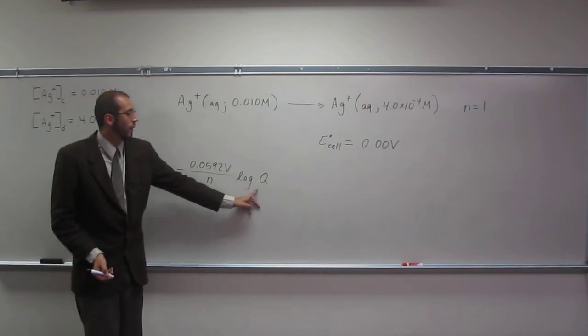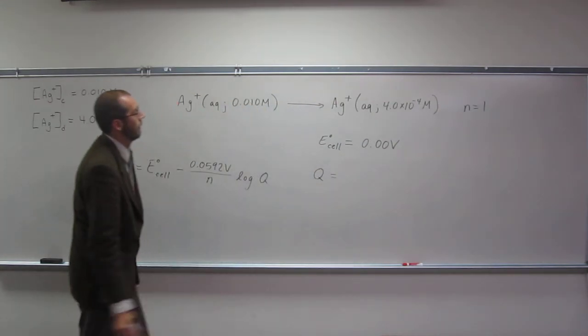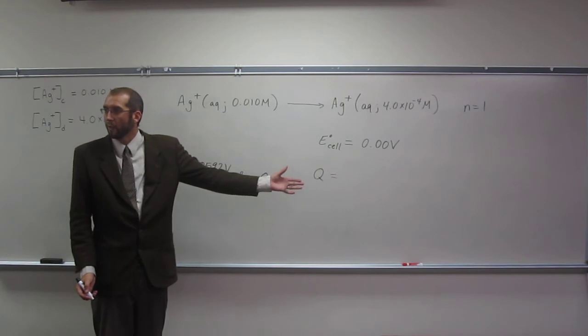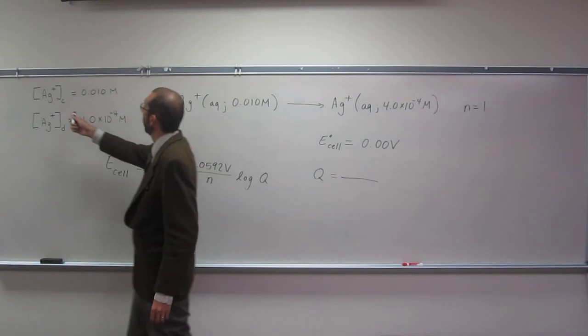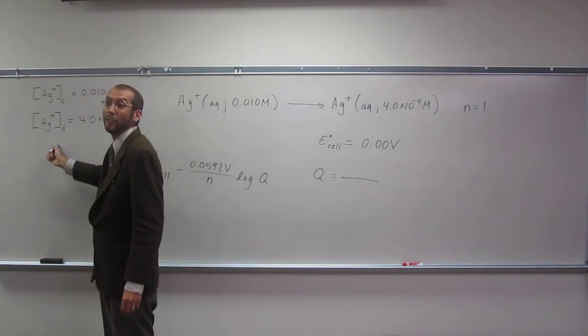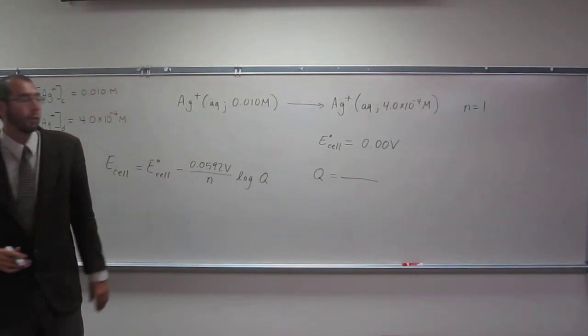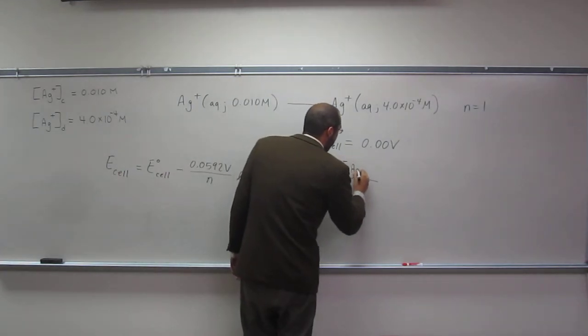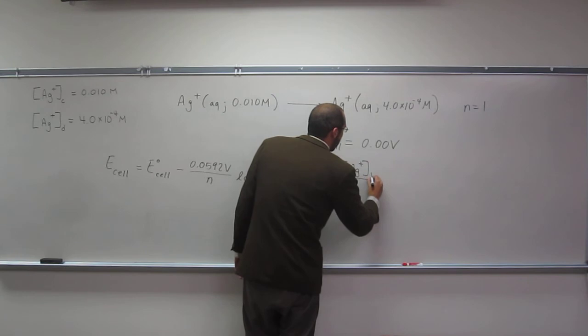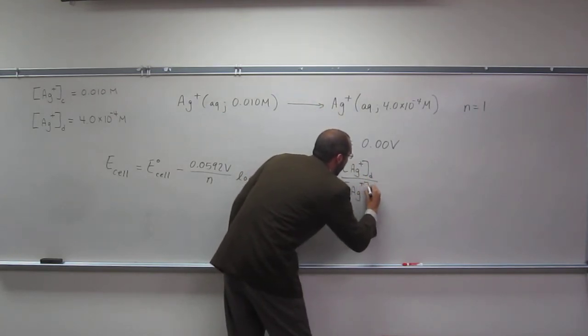Well, log of Q. Well, what would Q be? Help me out. Ag plus over Ag plus. Right? But the way I like to write it is with a little C and with a little D to say concentrated and dilute. That really kind of helps me to keep things in order. So what's on the top there? Dilute. Yeah. So Ag plus D and Ag plus C.